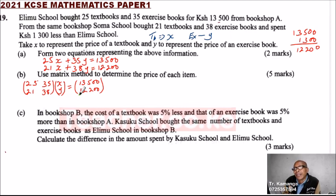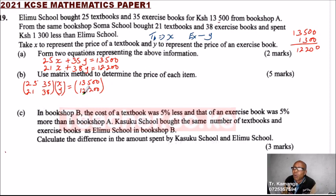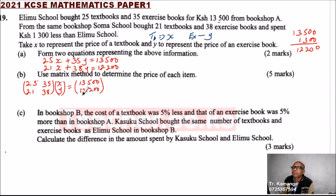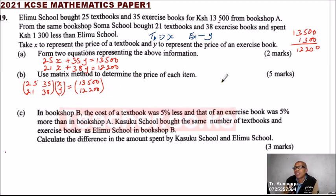To solve for X and Y — where X is the price of a textbook and Y is the price of the exercise book — you need to get the determinant. To be able to solve this, you multiply both sides by the inverse of the matrix.